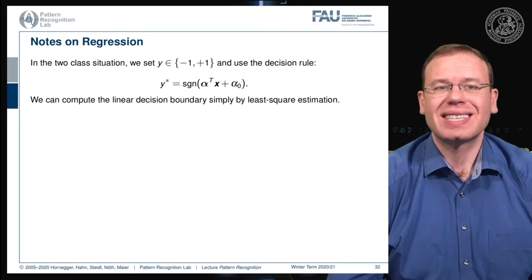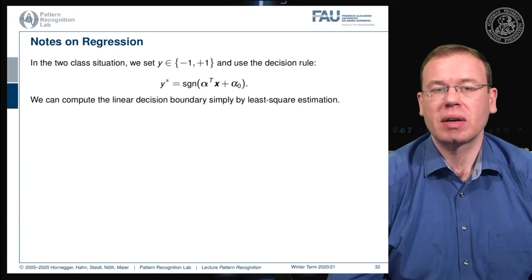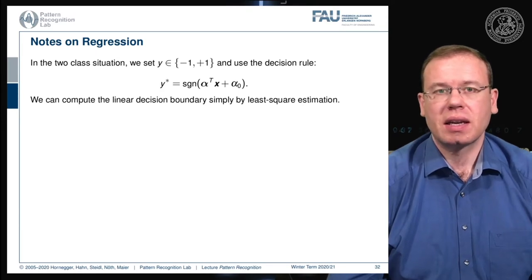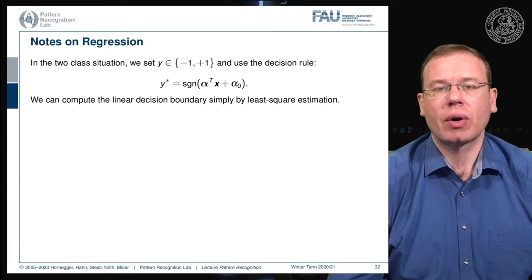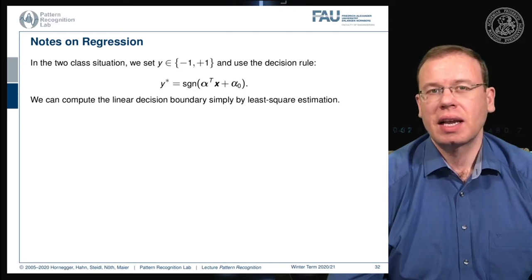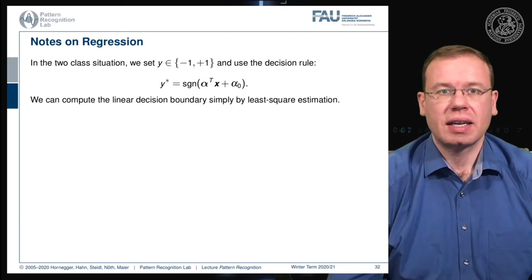In our two-class set, this would be sufficient to differentiate whether we are on one side or the other side of the decision boundary. We compute the signed distance, alpha transpose x plus alpha zero, to that particular hyperplane. The sign function tells us whether we are on one side or the other, as we've seen in the previous Adidas example.